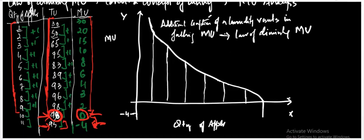The law of diminishing marginal utility states that as you keep on increasing the consumption of a commodity, the utility will tend to decrease, which will eventually become zero and then turn out to be negative.